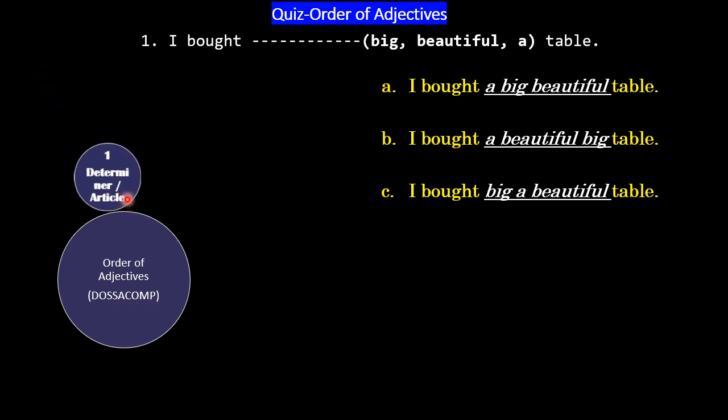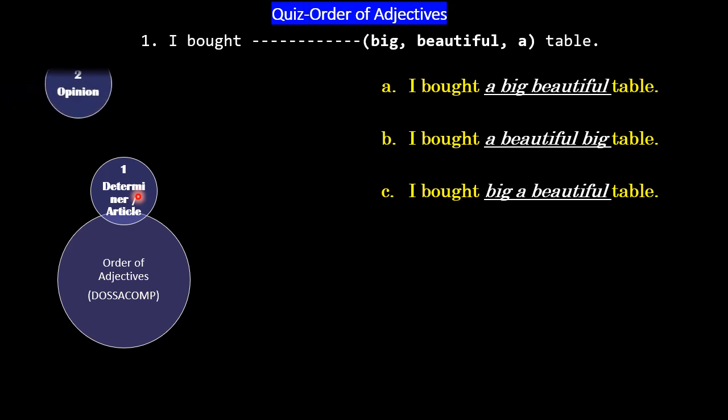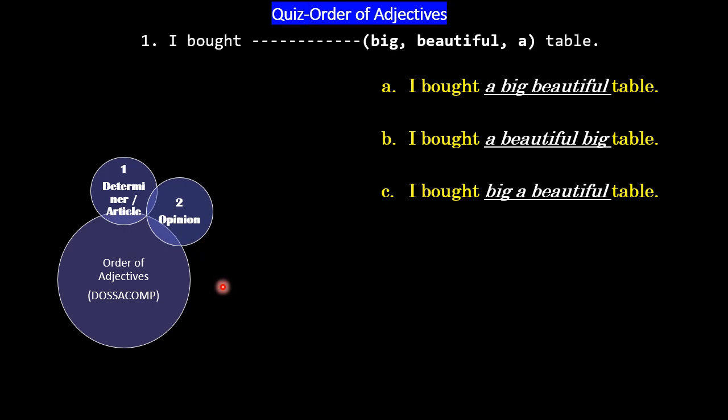First, D is a determiner. If you want to describe the table, the first word is a determiner — if you want to add articles, some, many, all, each and every — all those words. Next comes opinion: beautiful, ugly, nice, excellent, bad words.